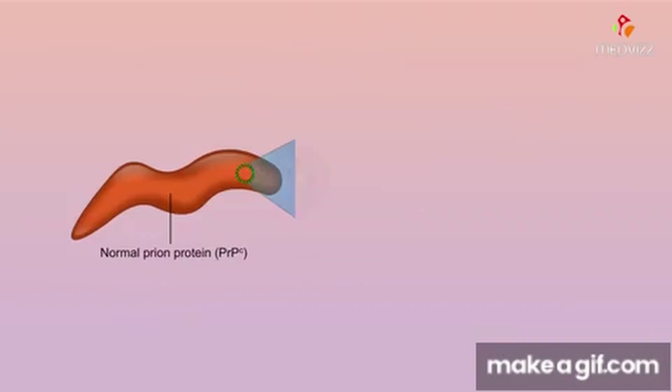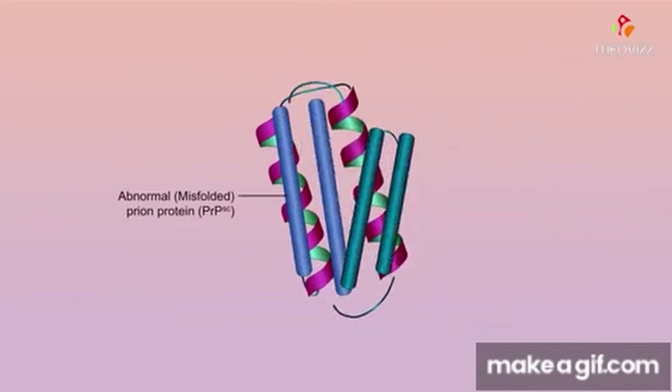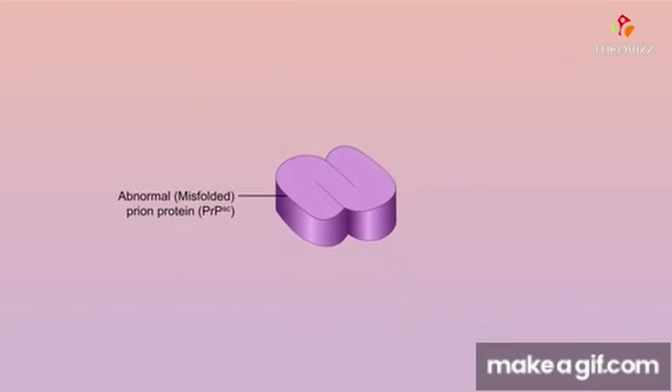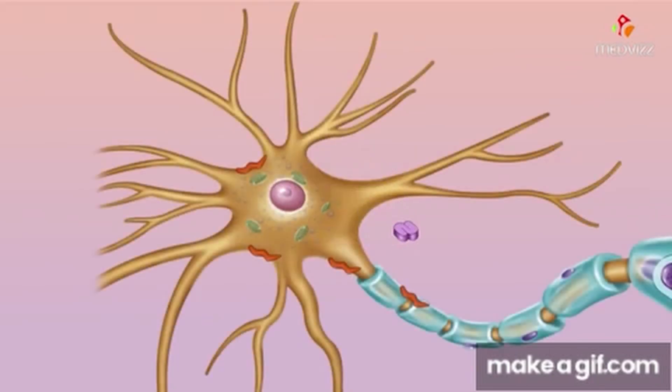In summary, Amanita phalloides' adaptability enables it to survive and thrive in various ecological niches, making it a fascinating example of natural resilience. Amanita phalloides, commonly known as the death cap, engages in various interactions with other organisms. Let's explore these aspects.